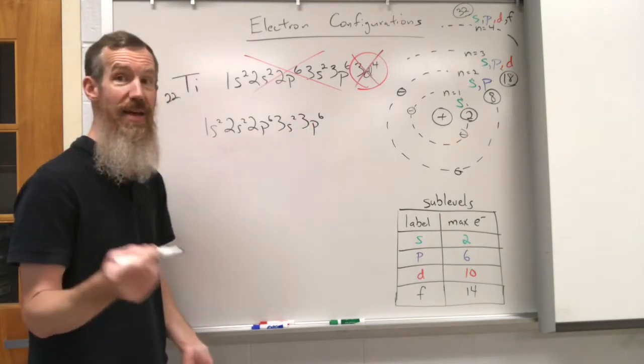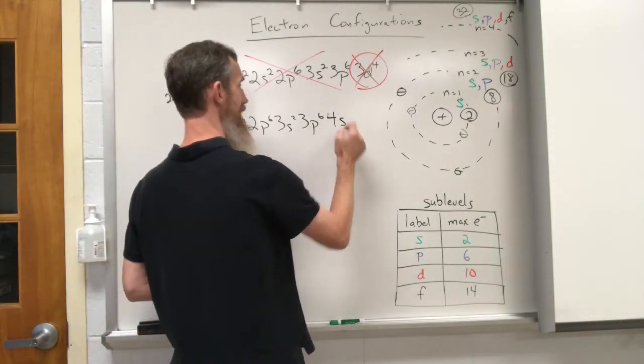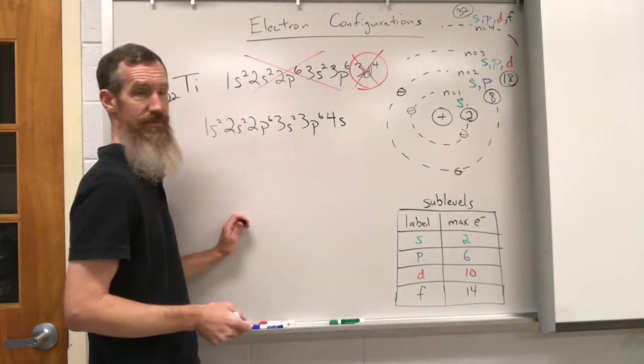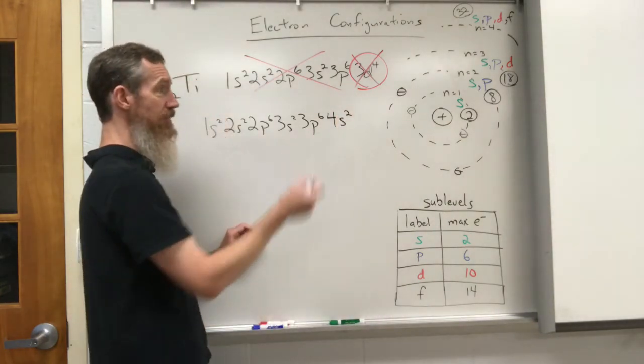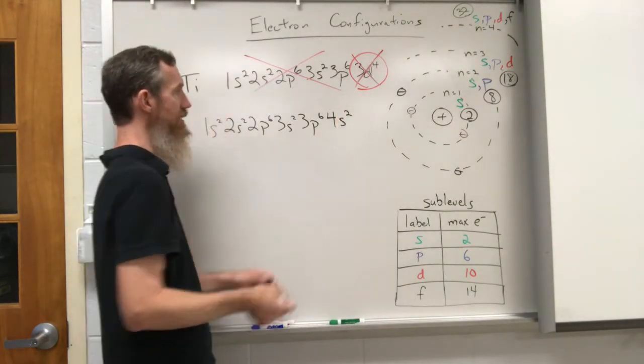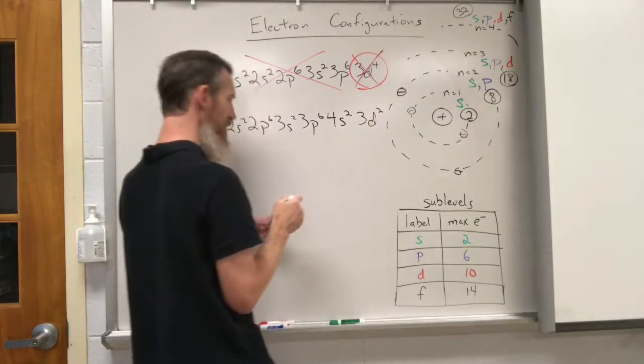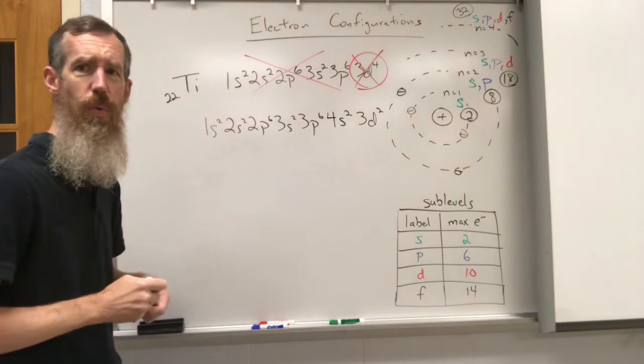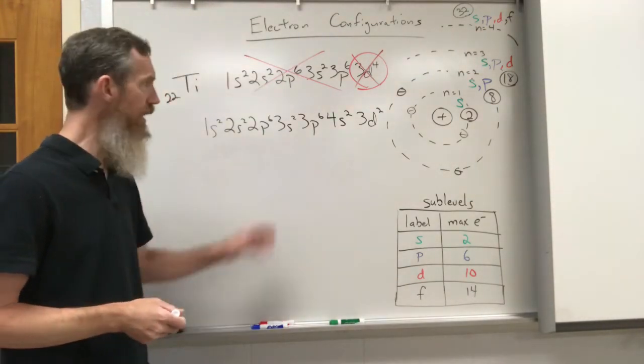And then what happens, which is weird, is we fill in the 4s and it can hold 2 electrons. And now I only have 20 electrons, and then I fill in the 3d and I'm only 2 left there. Wait, it's out of order. You're filling in the fourth before you fill in the third.